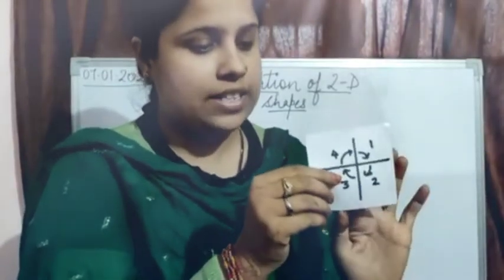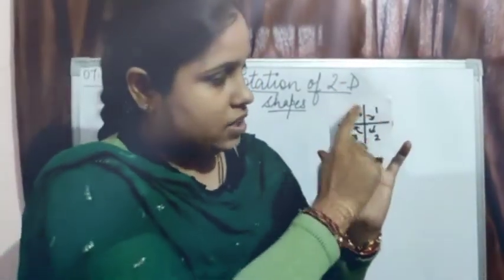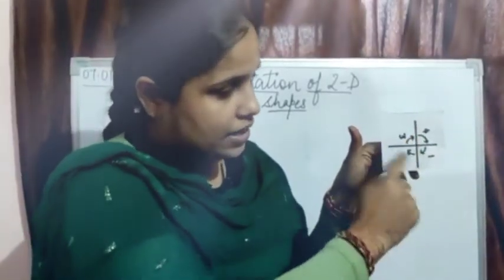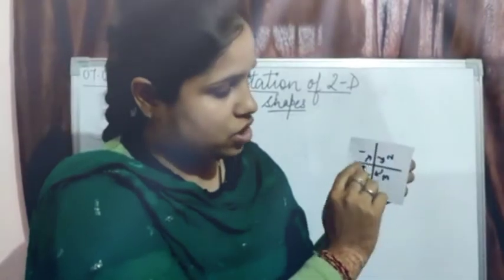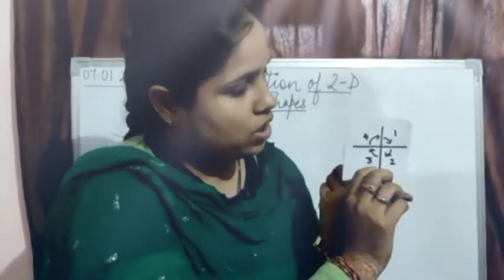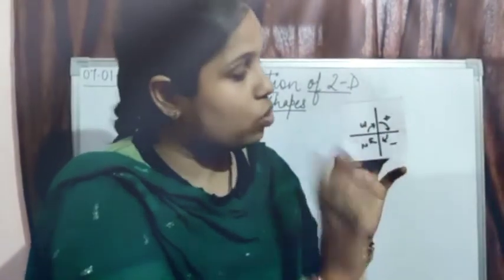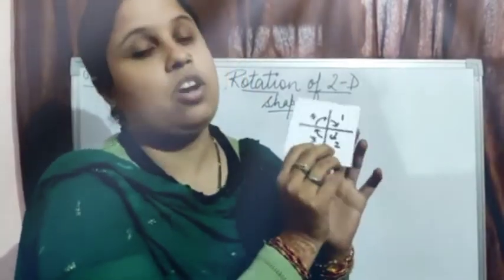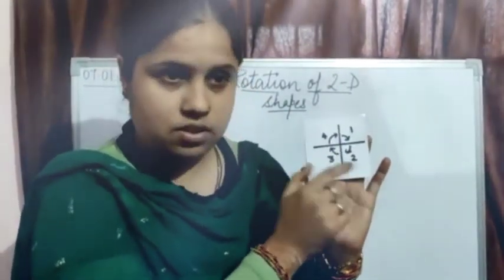We can also see examples given in your book. So this is one example: a plus sign. First rotation — it is the plus sign only. Second rotation — again it is the plus sign only. Third rotation — again it is the plus sign only. Fourth rotation — from all four sides it is only the plus sign. So the order of rotation is 4 for this plus.